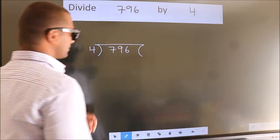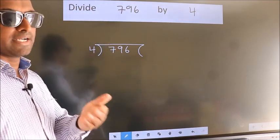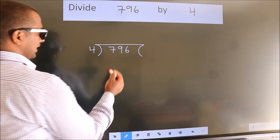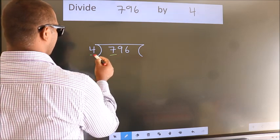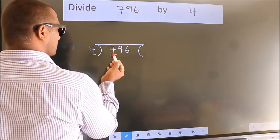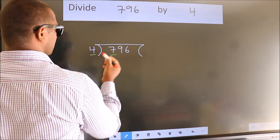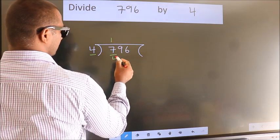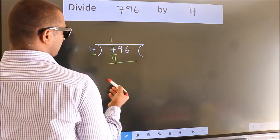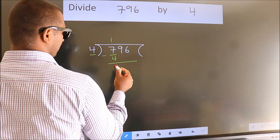This is your step 1. Next, here we have 7, here 4. A number close to 7 in the 4 table is 4 once, which is 4. Now we should subtract. We get 3.